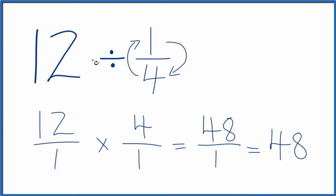So in answer to our question, 12 divided by 1 fourth equals 48. If you multiply 48 by 1 fourth, you get 12.